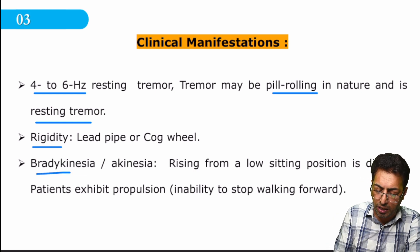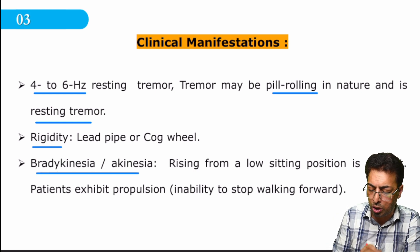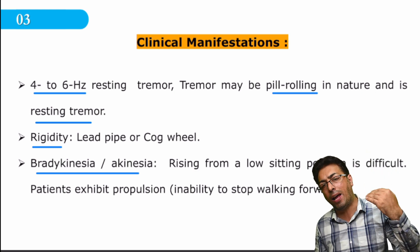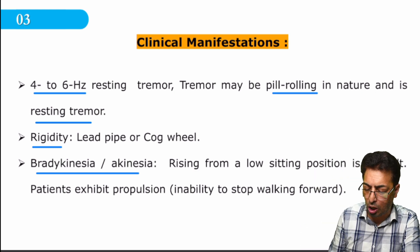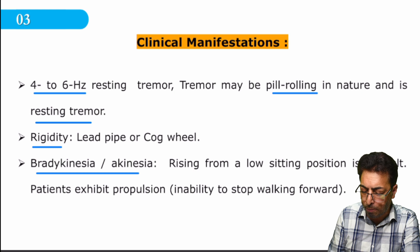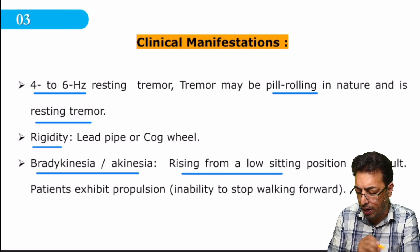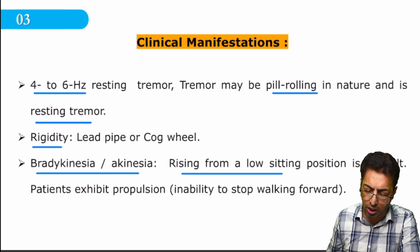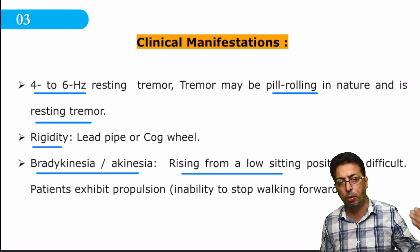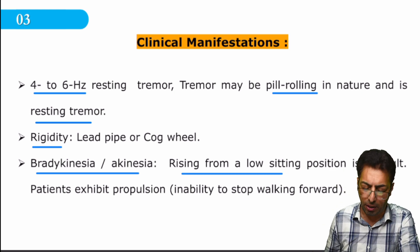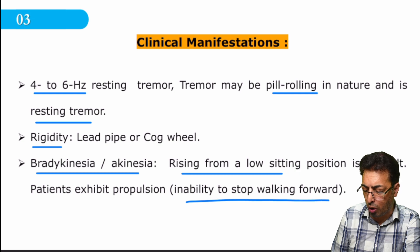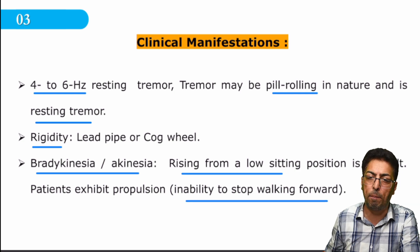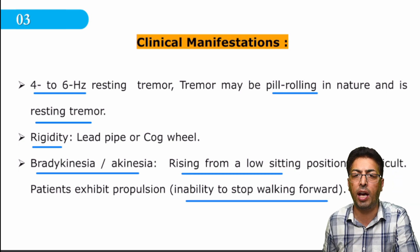Bradykinesia involves progressive akinesia manifested by slow movements. You can diagnose it by observing slowness in rising from a sitting position, and a patient cannot make movements comfortably. There is also inability to stop walking — the patient will have inhibition in stopping forward movement.